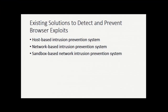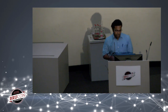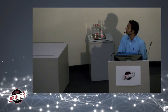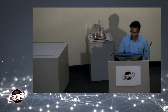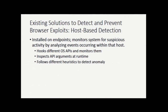Now we move to existing solutions to detect browser exploits. There are basically three: host-based intrusion prevention systems (HIPS), network-based intrusion prevention systems that sit at the corporate gateway, and sandbox-based network intrusion prevention systems. Let's take a deep look at each.